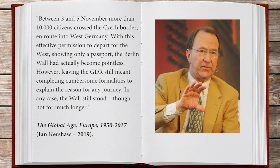Ian Kershaw wrote the following about this: Between 3 and 5 November, more than 10,000 citizens crossed the Czech border en route into West Germany. With this effective permission to depart for the West, showing only a passport, the Berlin Wall had actually become pointless. However, leaving the GDR still meant completing cumbersome formalities to explain the reason for any journey. In any case, the wall still stood. On the evening of the 9th of November 1989, the East German authorities held a press conference in which they announced the new border regulations.